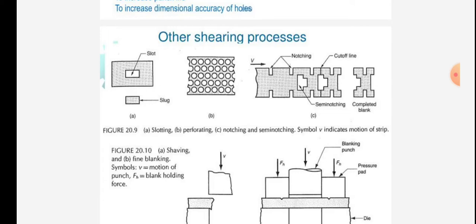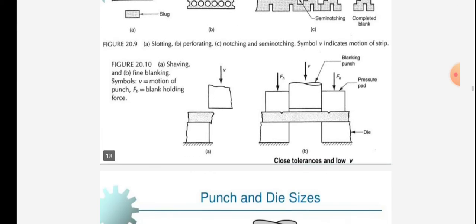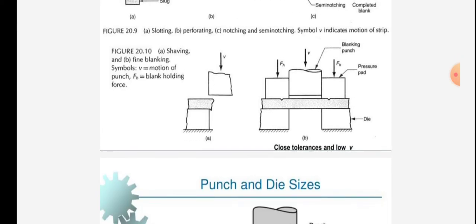Figure shows: figure A shows shaving and B shows fine blanking. Symbols: V is motion of the punch, FH is blank holding force, FN is the blank holding force with the velocity of the punch. This figure shows close tolerances and low V.